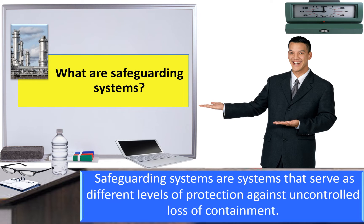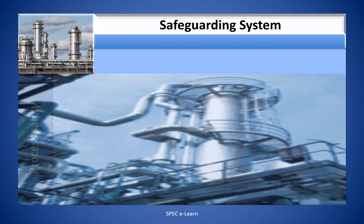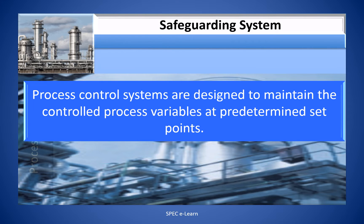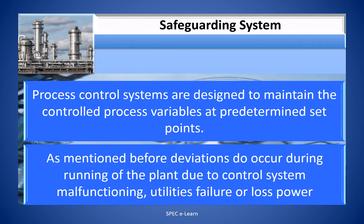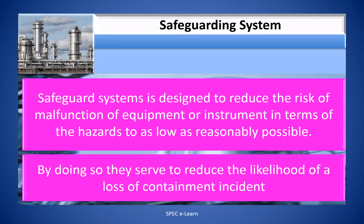Safeguarding systems are systems that serve as different levels of protection against uncontrolled loss of containment. Process control systems are designed to maintain controlled process variables at predetermined set points. Deviations do occur during running of the plant due to control system malfunctioning, utilities failure, or loss of power. Safeguard systems are designed to reduce the risk of malfunction of equipment or instruments to as low as reasonably possible, thereby reducing the likelihood of a loss of containment incident.